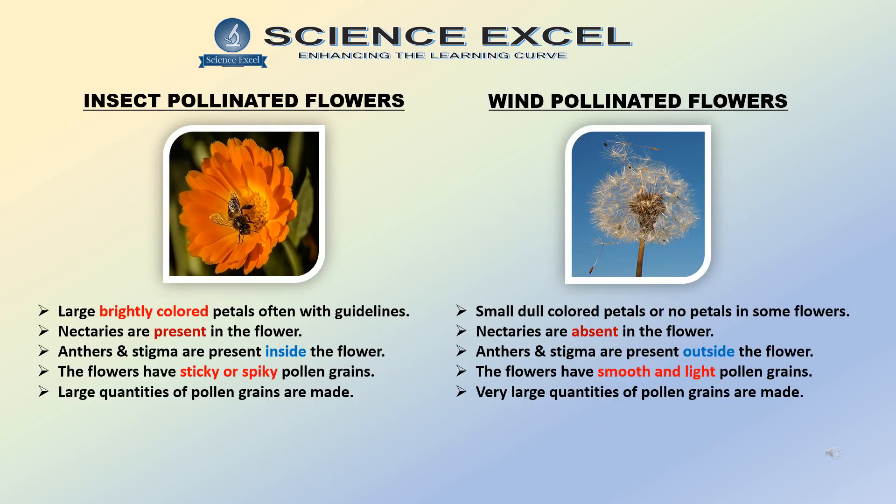Now let us understand the characteristics of insect pollinated and wind pollinated flowers. Insect pollinated flowers have large, brightly colored petals often with guidelines to help attract insects, whereas in a wind pollinated flower the petals are small, dull colored and some species have no petals present as there is no dependence on insects or any other agent except the wind to help in pollination. Insect pollinated flowers have nectaries present at the base of the petals which contain a sweet fluid called nectar to help attract insects, and in wind pollinated flowers nectaries are absent.